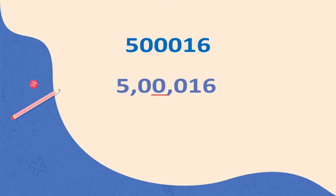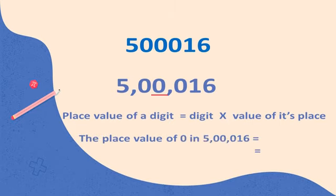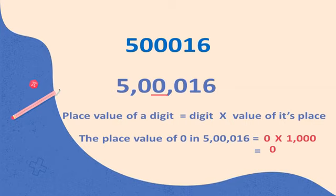We already discussed that the place value of a digit equals digit multiplied by the value of its place. So, the place value of 0 in 500016: the digit is 0, and 0 is at the thousands place, so the value of that place is 1,000. Therefore, 0 × 1,000 = 0. The place value of 0 in 500016 is 0.